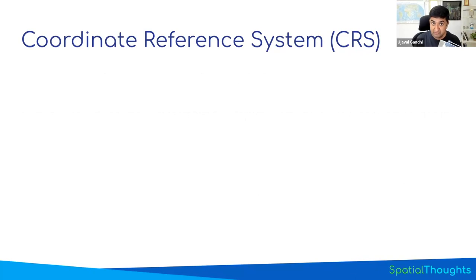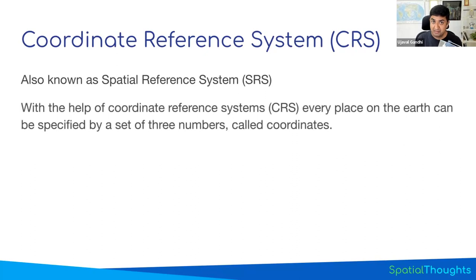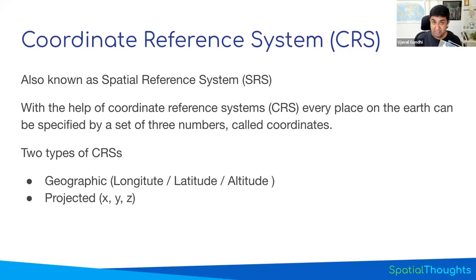Once we know which datum to use, we can overlay a grid of coordinates and accurately locate any place on Earth. This is known as a Spatial Reference System, and it allows us to locate any place using X, Y, and Z coordinates. There are two broad types of spatial reference system. One is called a Geographic Coordinate System — if you ever use latitude, longitude, and altitude values, those are in a geographic coordinate system. There are also Projected Coordinate Systems, which are planar coordinates with X, Y, and Z.